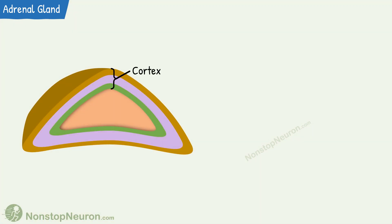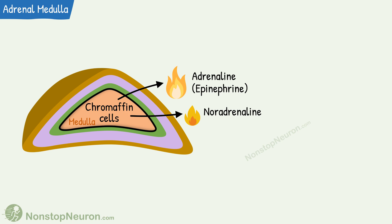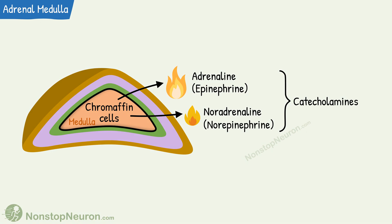Broadly, the adrenal gland has an outer cortex and an inner medulla, which is the central part of the adrenal gland. The adrenal medulla contains chromaffin cells. They mainly produce adrenaline, also known as epinephrine, and a variable amount of noradrenaline, also called norepinephrine. These are known as catecholamines, and they serve to regulate the visceral functions of the body.